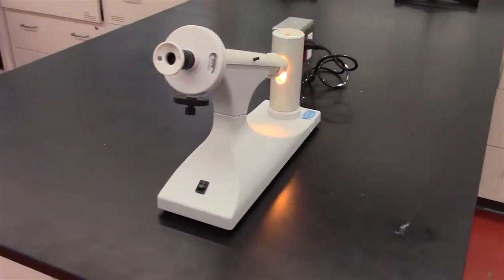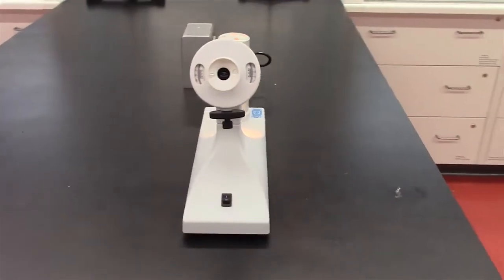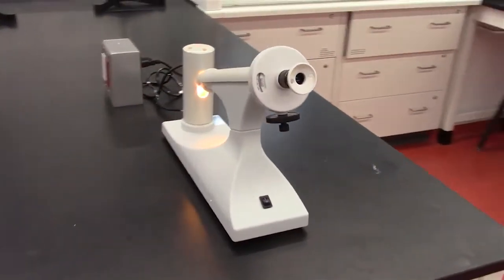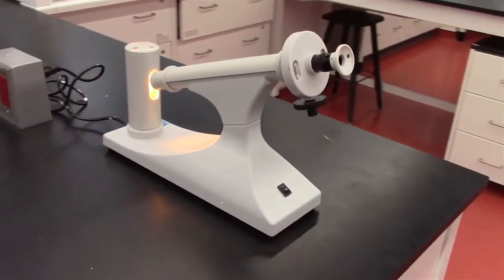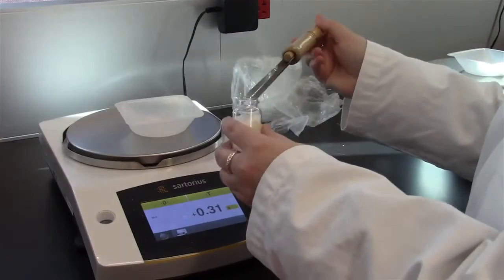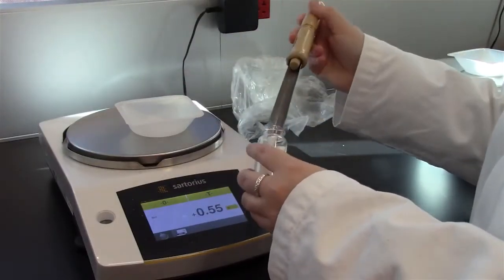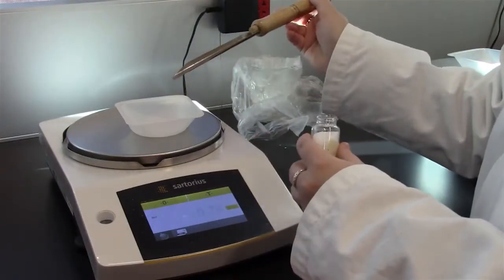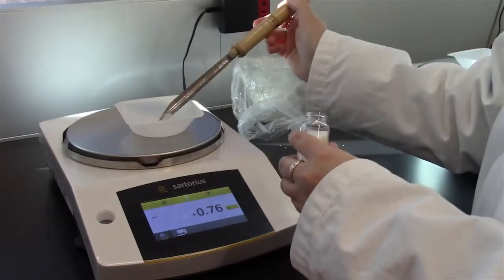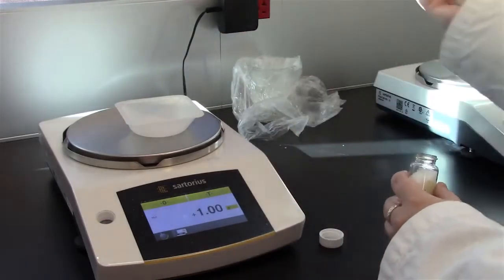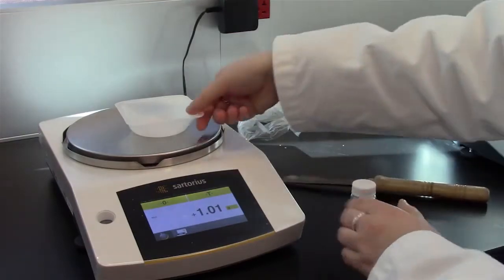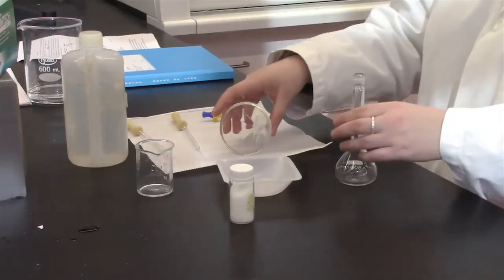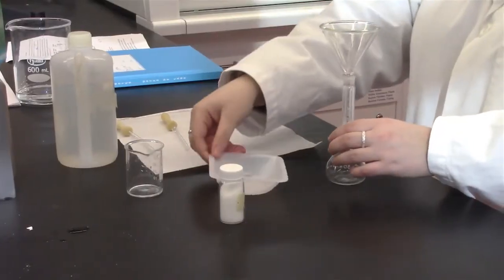The polarimeter machine will be turned on by your TA prior to the beginning of the lab. Prepare your solution with your unknown substance and note its concentration. To prepare the solution using your unknown substance, weigh out the desired mass of substance and using a funnel, transfer it to a volumetric flask.